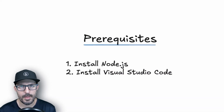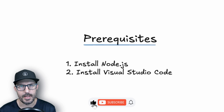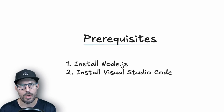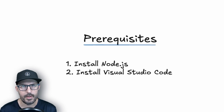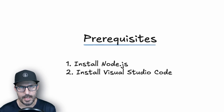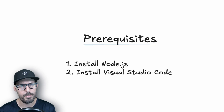Before we get started, there are a couple of prerequisites in order to follow along with this video. The first one is that you want to make sure that you've downloaded and installed Node.js, as it's required to install and run Prettier. The second thing is to make sure you've downloaded and installed Visual Studio Code, because this is where we're going to be writing all of our code, testing out the functionality of Prettier, and installing the Prettier extension. If you need help with any of these, I do have videos on both topics, which I'll link down in the description below.